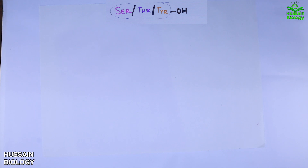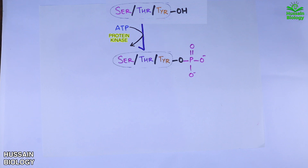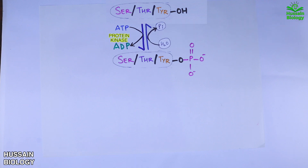To start the phosphorylation reaction, we have the ATP molecule, which reacts with the hydroxyl group of the amino acid in the presence of protein kinase enzyme, thereby providing one phosphate towards the amino acid residue, thus leaving us ADP and a phospho amino acid. This is a reversible reaction, as shown in the diagram, where water reacts with the phospho amino acid in the presence of protein phosphatase, which ultimately removes the phosphate from the amino acid — and this is our dephosphorylation event.